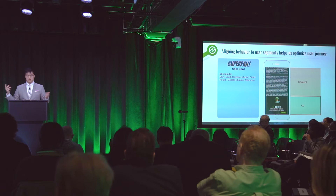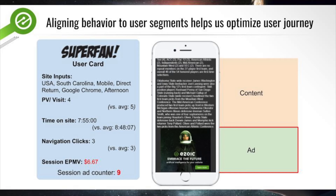Imagine our user continues browsing another couple of pages and then wraps up their session. This final ad is at the end of the content — it's a big square ad right in the middle. We show it at the end of the content because we know the user is probably close to ending their session, and we don't want to interrupt them in the middle since they're unlikely to stop reading and click on that ad. Our superfan ended their session with a total of four page views, spent almost eight minutes on our site, and we showed them a total of nine ads — ending the session with an EPMV of $6.67, which is pretty good.